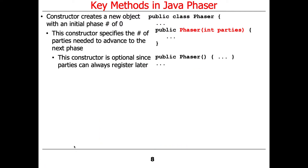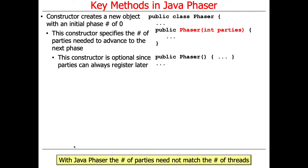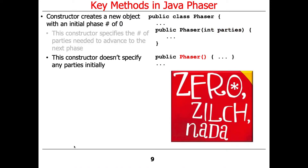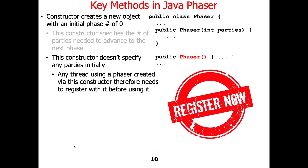This constructor is optional since parties can always register later, so they don't have to give an initial count. With the Java phaser, the number of parties need not match the number of threads — it's more flexible. The no-argument constructor does not specify any parties initially, and instead requires the thread that uses such a phaser to register with the phaser instance before it's actually used.